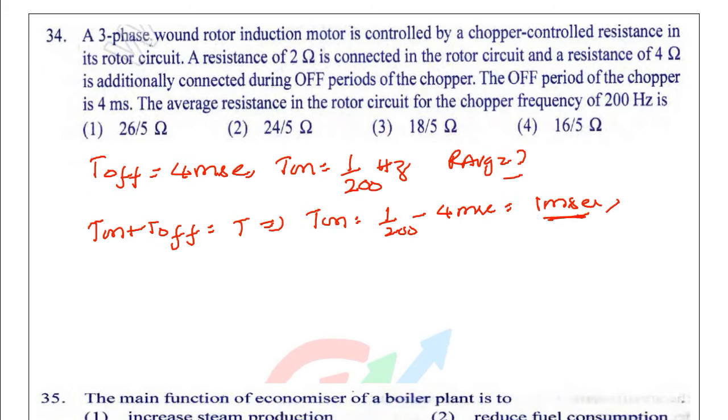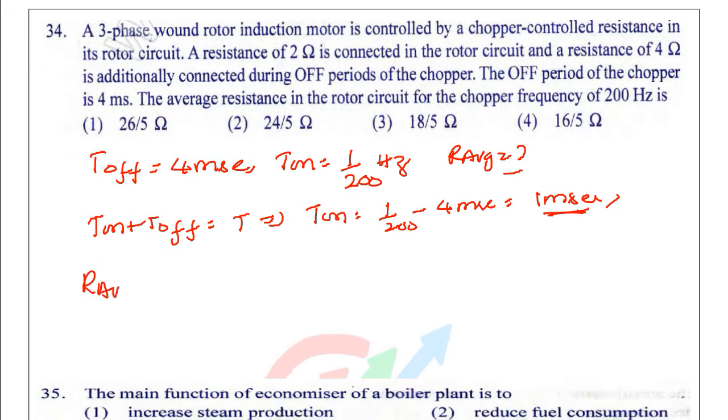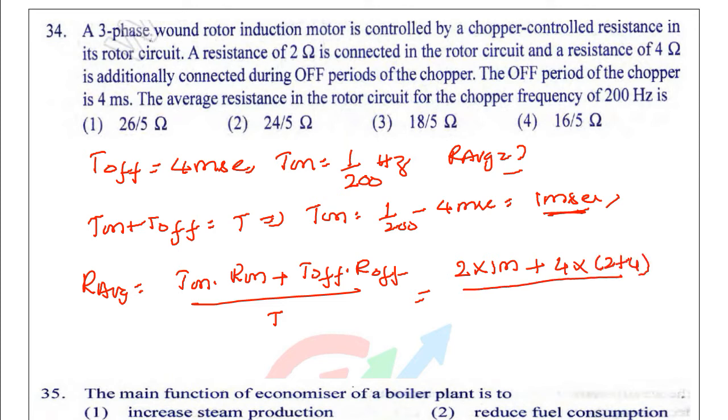R_average equals T_on times R_on plus T_off times R_off divided by total time period T. So T_on is 1 millisecond, R_on is 2 ohms, T_off is 4 milliseconds, and the resistance during off period is 2 plus 4 equals 6 ohms, divided by T.